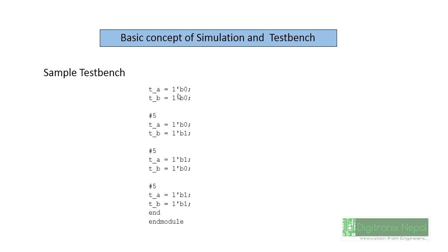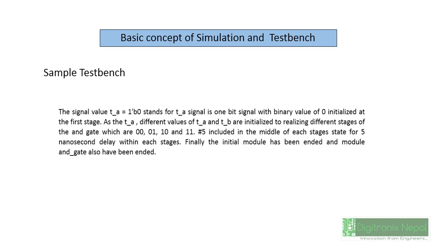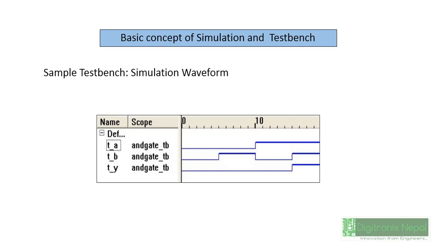'ta' has been initialized with '1'b0', which is a 1-bit binary value of 0. Similarly, 1-bit binary 1 value. A 1-bit binary only consists of 1 or 0, so we don't need '1'b' strictly, but this is the standard procedure for initializing any variable or value. The sample test bench consists of '1'b0', which is actually a 1-bit binary initialized by 0. We can get this type of waveform from that type of simulation test bench.